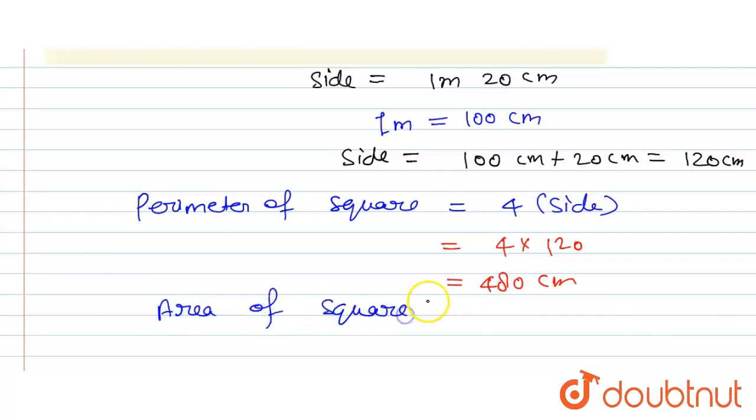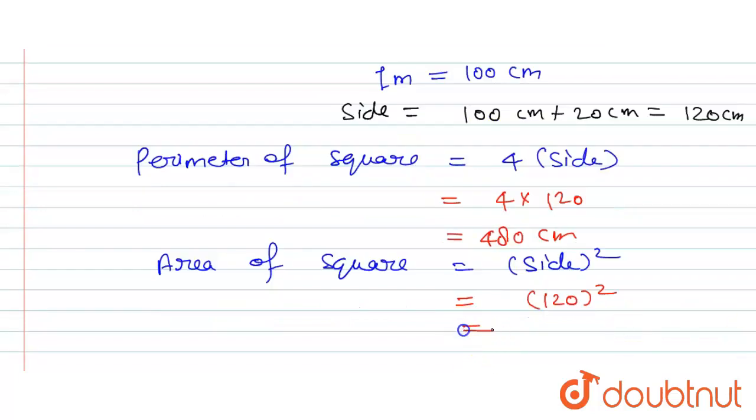so this is equal to side squared, and side given as 120, so 120 squared. So square of 120, that is going to be equal to 14,400 and centimeter squared. So this is the final answer for this question.